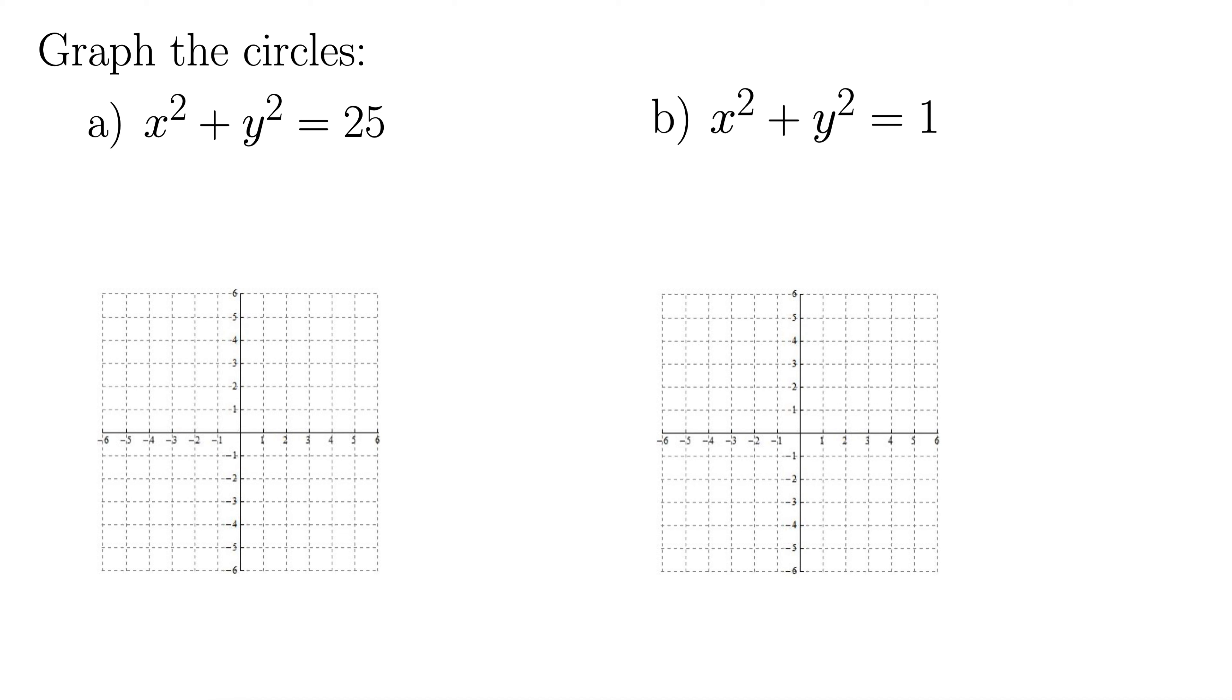Here we have two examples of graphing circles. The first one is x squared plus y squared equals 25. And the general form for a circle is x squared plus y squared equals r squared.